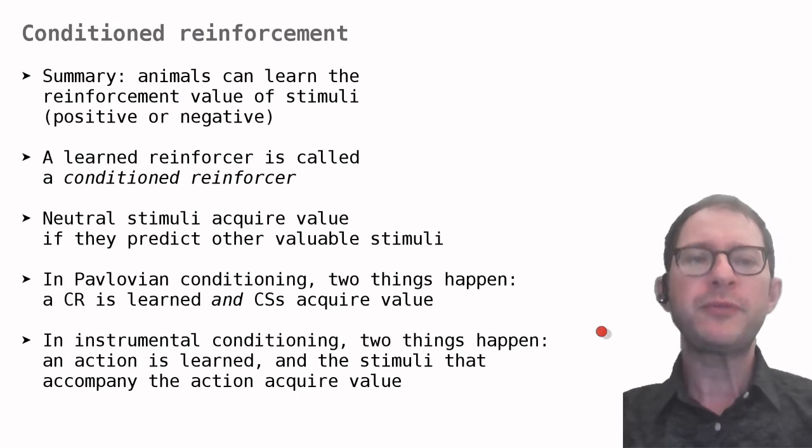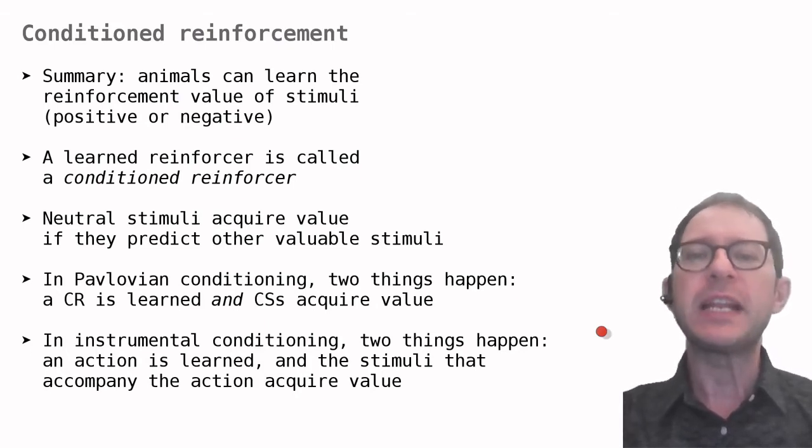The experiments we have reviewed so far show that animals can learn to value stimuli that are initially meaningless to them. By now we are familiar with the fact that experimental psychologists use the word conditioning to mean learning, so the technical term for a learned reinforcer is conditioned reinforcer. We have also seen that animals can learn actions that result in learned rewards, even if these learned rewards don't actually do anything good for the animal, like the sound of the food magazine.